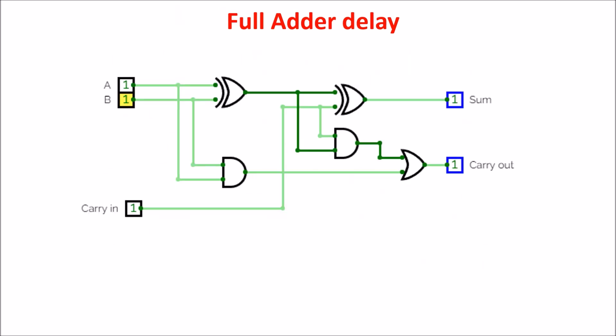A first approach to face the adder delay could be considering the propagation times of the logic gates to be equal. So the propagation time of a XOR is equal to that of the OR and that of the AND gates. In this case, the sum time is 2T gates, and the carry out time is 3 gate times.